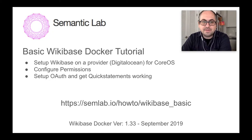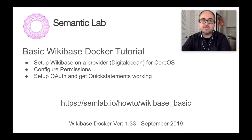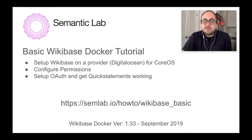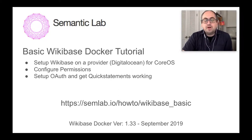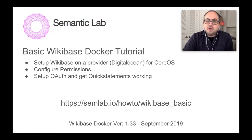This is a tutorial on installing Wikibase using the Docker image on a provider — an actual internet service provider. We're going to go through configuring some settings with the Docker image and Wikibase itself, and we're also going to get OAuth set up so that you can use Quick Statements, which is very important. There's also a text portion to this, so if you don't want to type out all the commands, you can copy and paste from the web address below. This is for version 1.33, and it's September 2019.